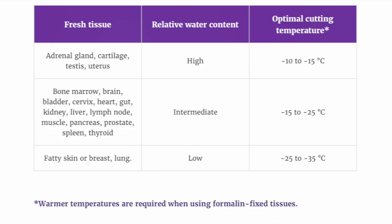It's worth pointing out that owing to the differences in water content between various tissues when fresh, this will affect the overall hardness of the tissue when frozen, and so it is often necessary to make slight adjustments to your cutting temperature. In the case of something like adrenal gland or cartilage, which has a relatively higher water content, you would use a relatively warmer cutting temperature, as compared to something like breast or fatty skin, which, having a relatively lower water content, will require a much cooler cutting temperature.